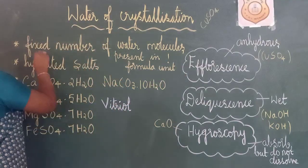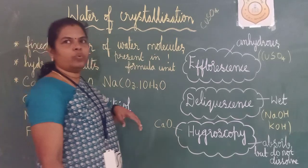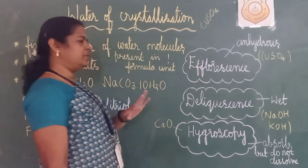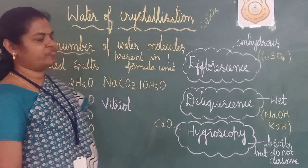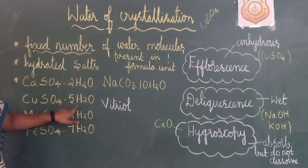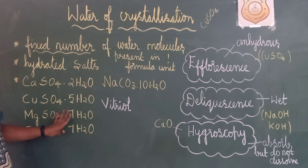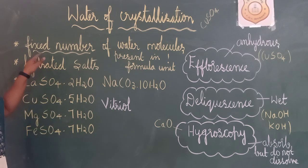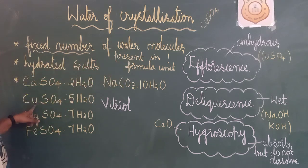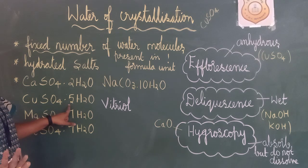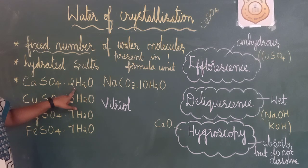Fixed number of water molecules present in 1 formula unit. For example, if I am taking copper sulfate, I have written 5. In some other salts, I have written 2, 5, and so on — different numbers. For copper sulfate, it will always be 5 molecules of water. For calcium sulfate, it will always be 2 molecules of water.